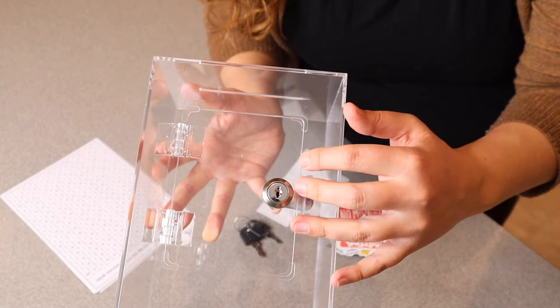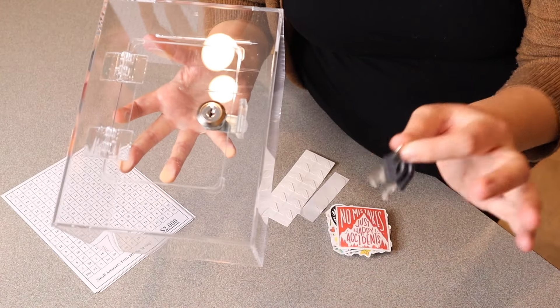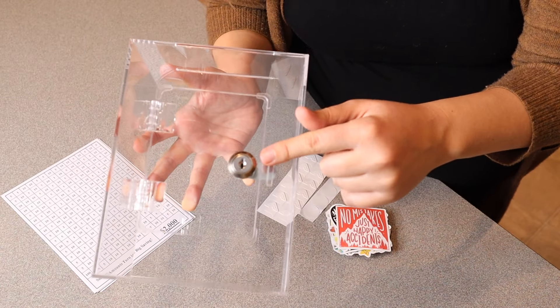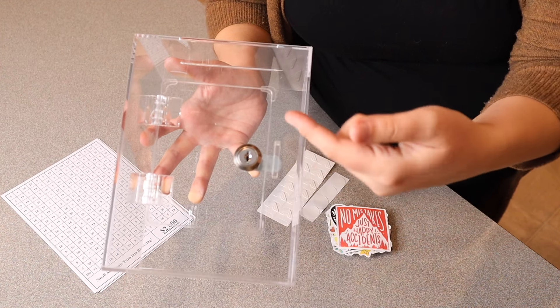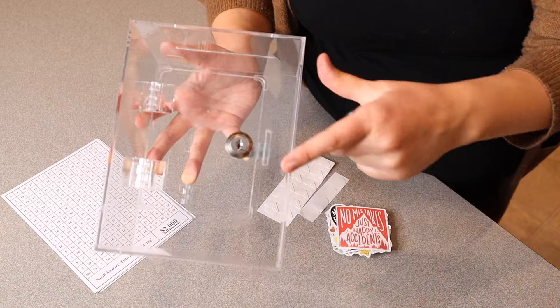You can see right here it does have a door in the front that you can easily open with the keys that it comes with. I like that when you're creating your own savings plan you're kind of held accountable by not having this easily accessible by having these keys.